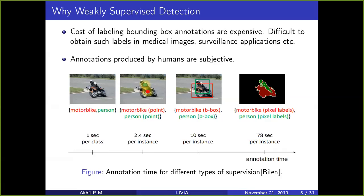The primary objective is to reduce bounding box annotations and scale up development. Additionally, there is the problem that annotations given by humans are subjective — if we ask 10 people to draw the bounding box they will do it in different ways. These two things are the primary motivation for weakly supervised detection.